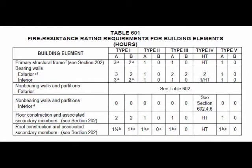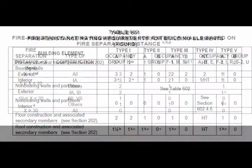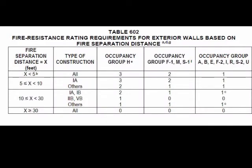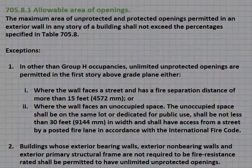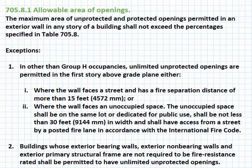IBC Table 601 specifies the minimum fire resistance rating requirements for primary structural frames, and Table 602 specifies the minimum fire resistance rating requirements for non-bearing exterior walls based on fire separation distance. For a fire separation distance of at least 10 feet but not more than 30 feet for a Group S1 occupancy, the fire resistance rating of the exterior walls is 1 hour for Type 3B construction, labeled as 'Others' in the second column. IBC Section 705.8.1 Exception 2 is therefore not applicable, and Table 705.8 needs to be consulted.